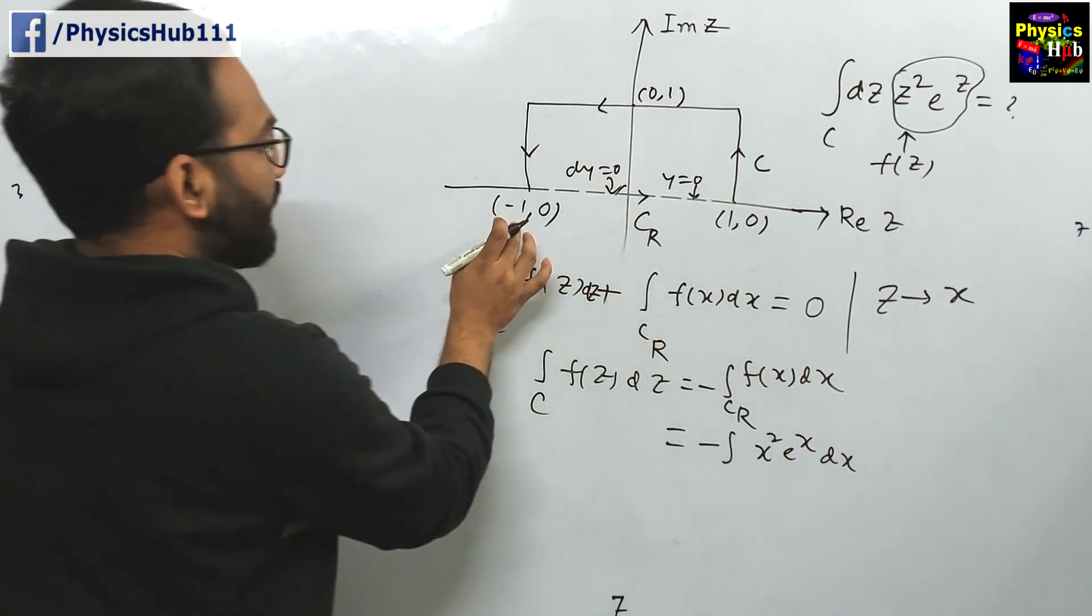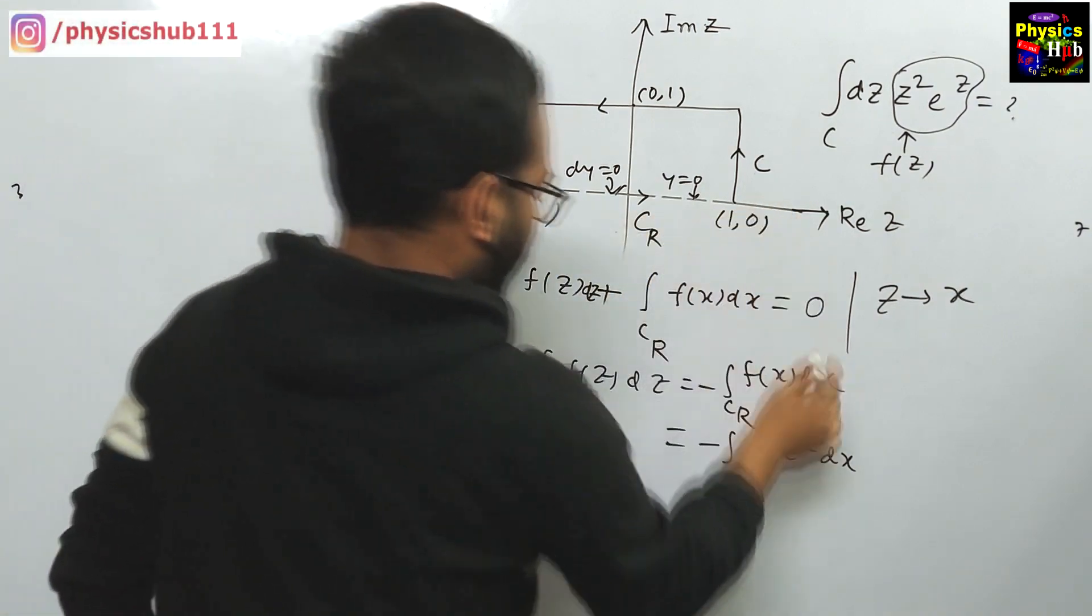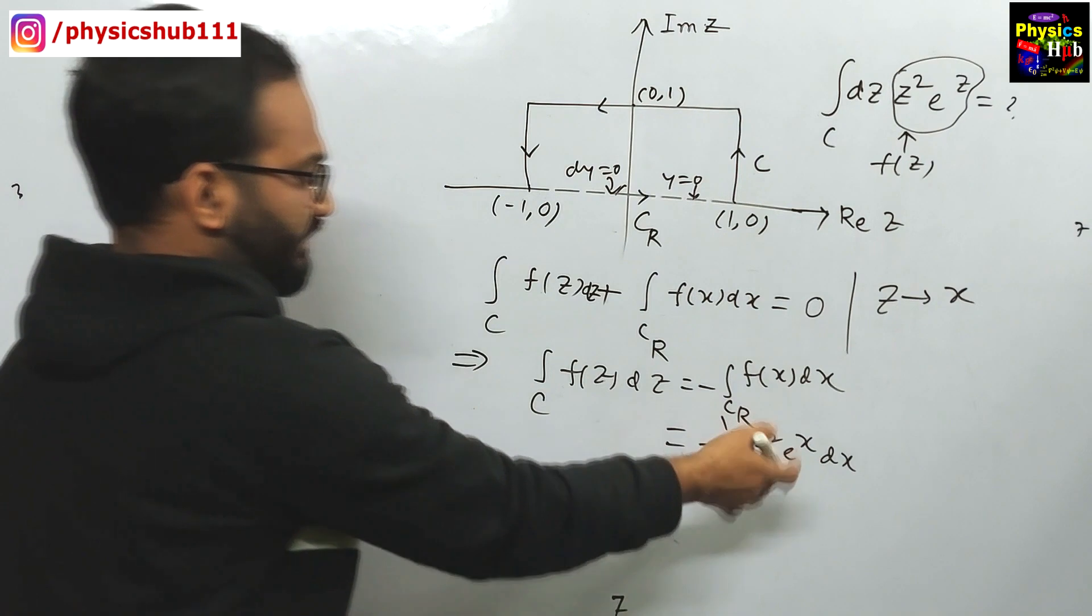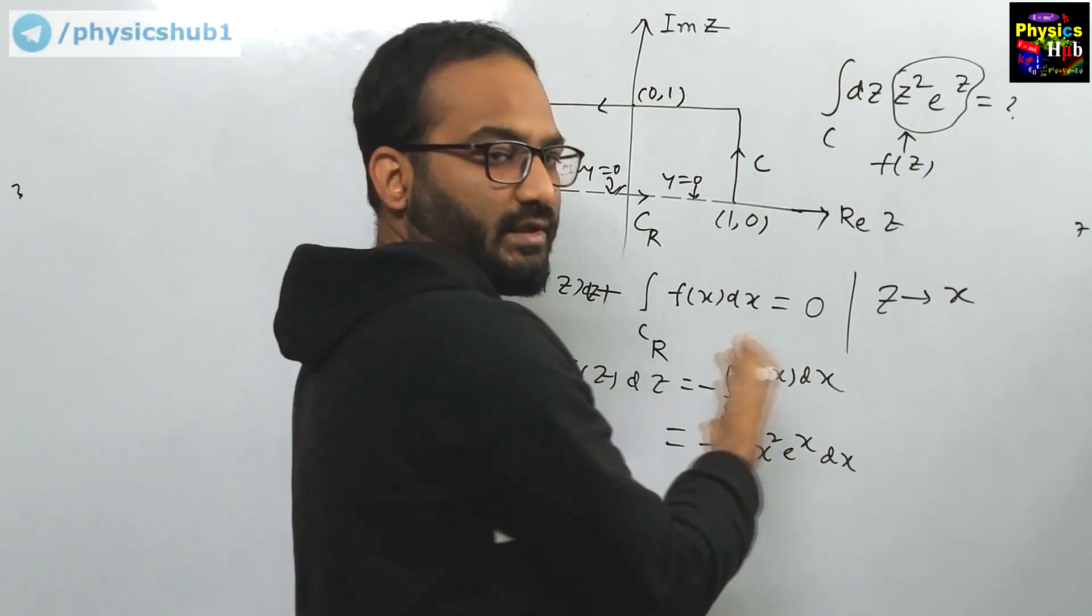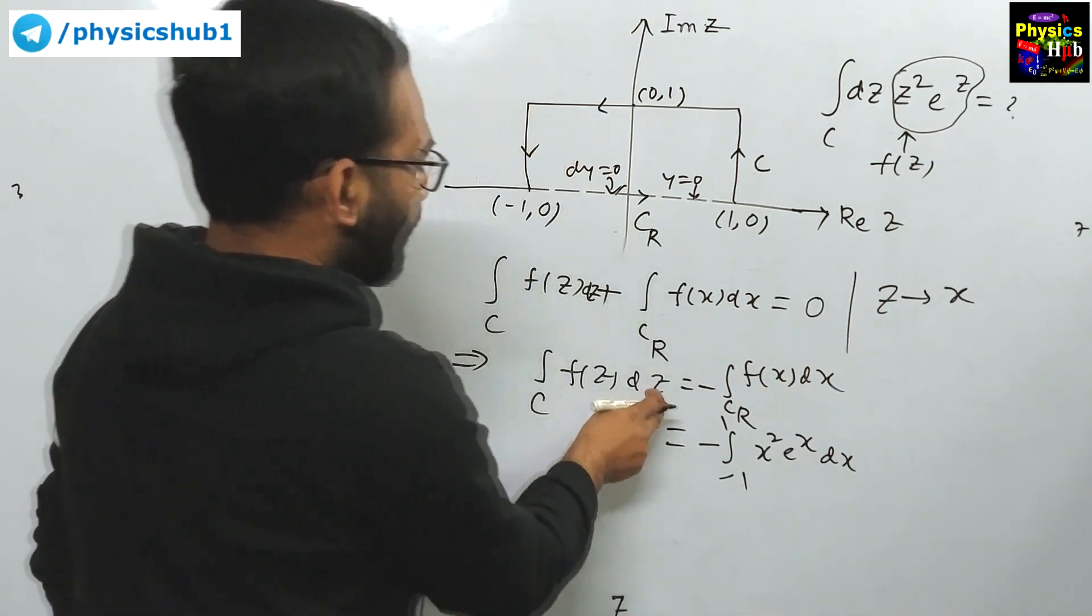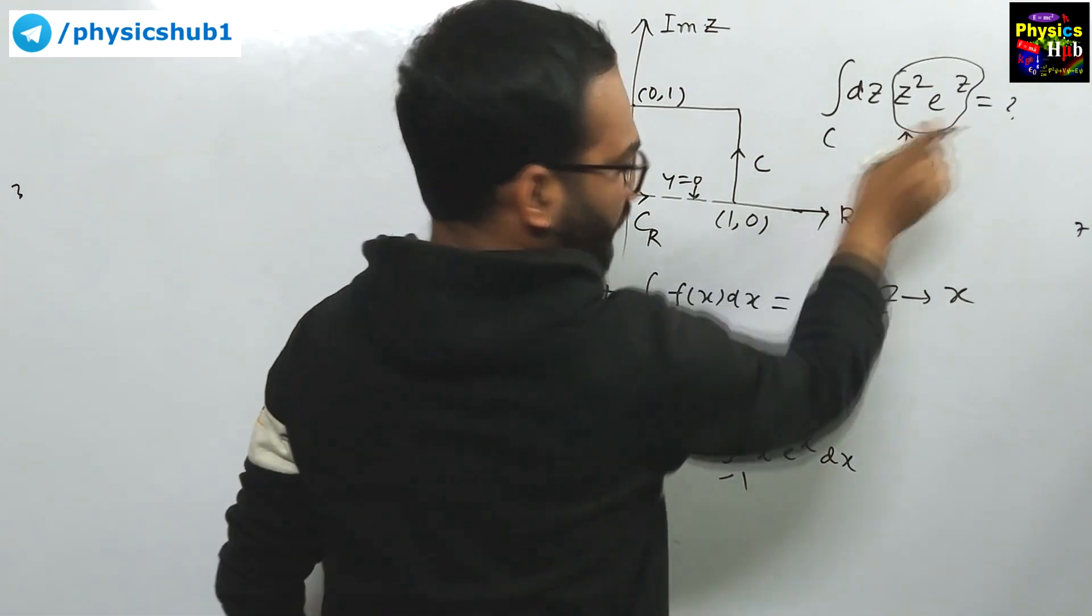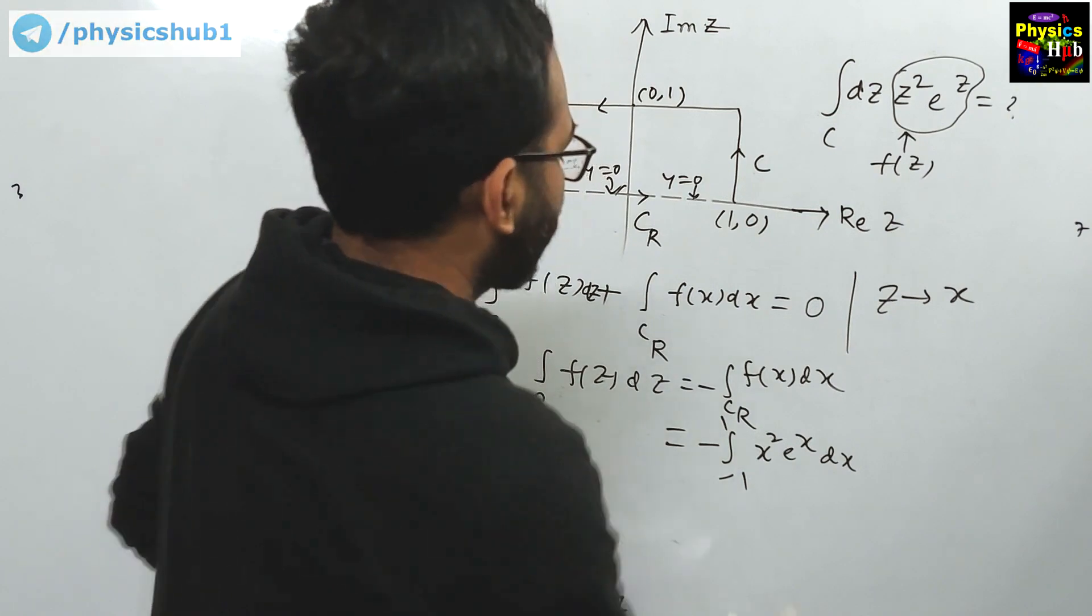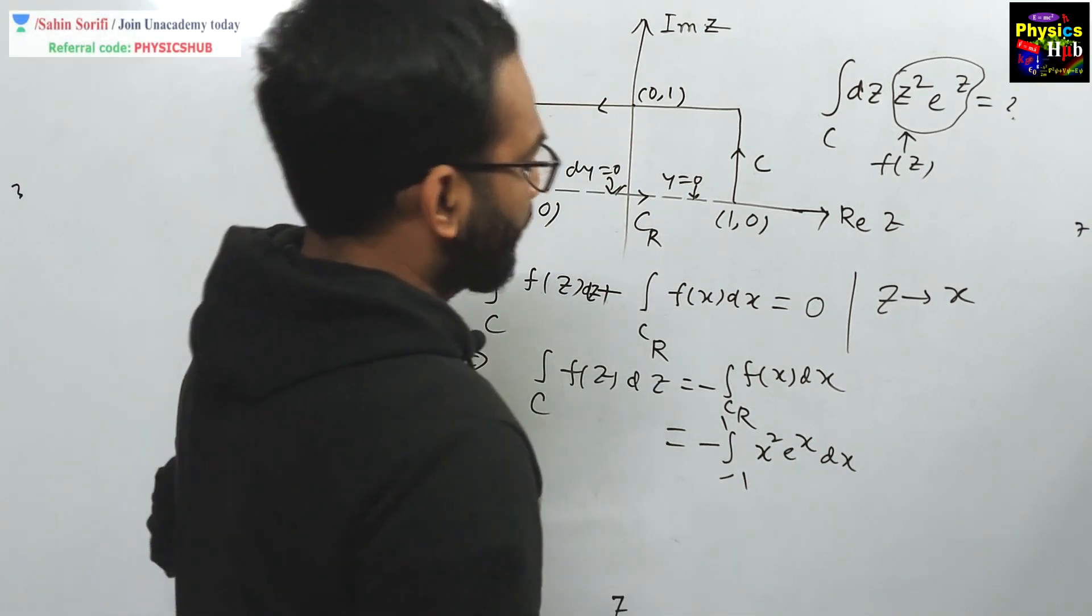What you can do: minus integral over Cr, f of x is x² e^x dx. Now, the limit of x, you can see, is running from -1 to +1. So, -1 to +1, x² e^x dx. If you somehow calculate this portion, the right-hand side, we can easily calculate the value of this desired value.